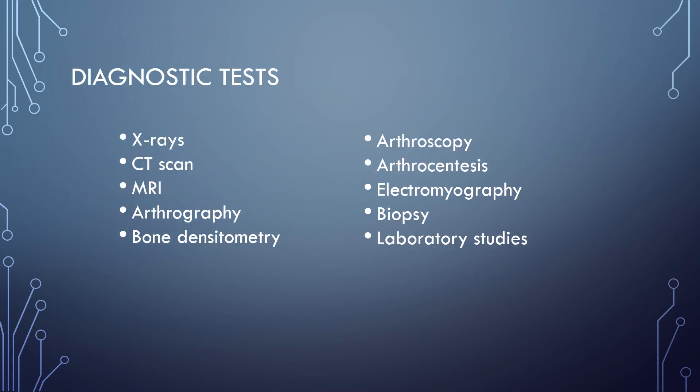There are many diagnostic tests we can do to assess the musculoskeletal system. The most common we see are x-rays for bone injuries, CT scans or MRIs for tissue damage — torn muscles, ligaments, cartilage, and tendons. We can also do bone density scans to see how dense or how hard the bones are. Many of these diagnostic studies listed are invasive procedures, and some do require general anesthesia.